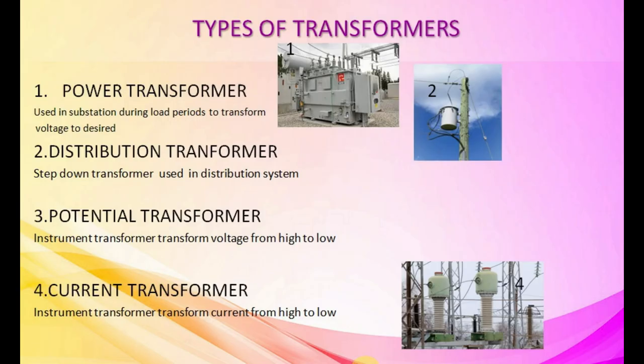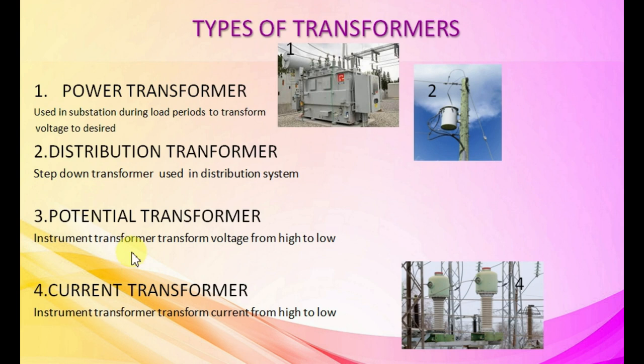Types of transformers: 1. Power transformer — used in substations during load periods to transform voltage to desired level. 2. Distribution transformer — step-down transformer used in distribution systems. 3. Potential transformer — instrument transformer that transforms voltage from high to low. 4. Current transformer — instrument transformer that transforms current from high to low.